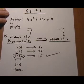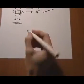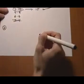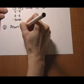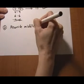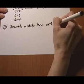So that will be step 2. Step 2 is rewrite the middle term with the factors we just found.